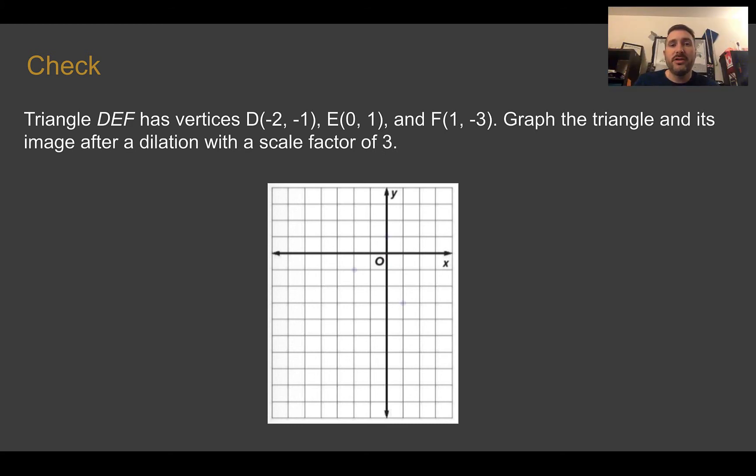Check your answer. First, here's our original pre-image. That's where the coordinates should be located. Then if we want to graph multiplying by a scale factor of 3, we would make every point 3 times as far away. So point D, which was at negative 2, negative 1, times by 3 would now be at negative 6, negative 3. E was at 0, 1. Multiply that by 3. Now it's at 0, 3. And F multiplied by 3 would be 3, negative 9. And everything is 3 times farther than it was from the origin.